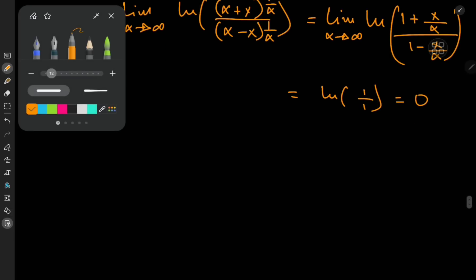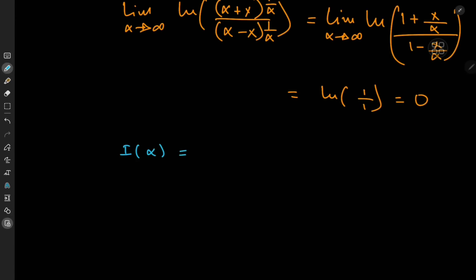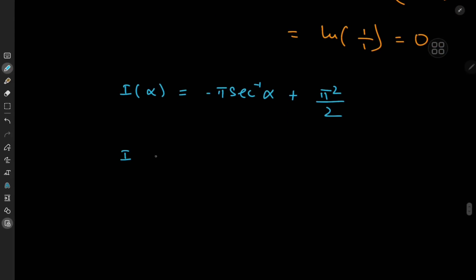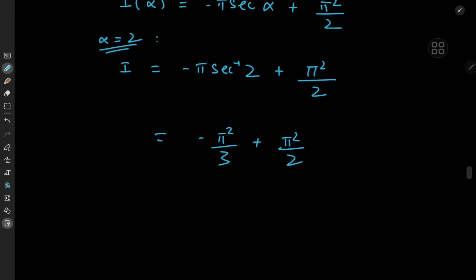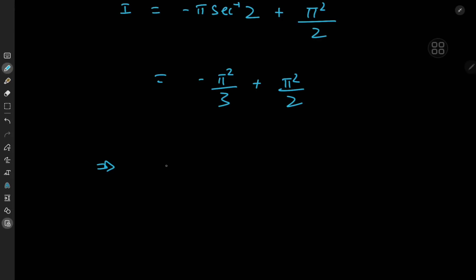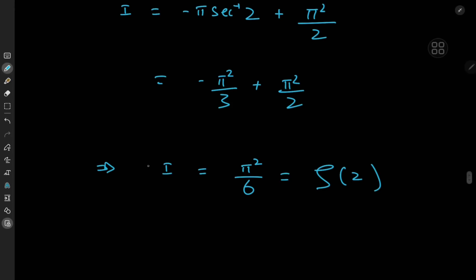We now have I(alpha) = -pi times the inverse secant of alpha + pi²/2. Our target was alpha = 2, so I(2) = -pi times the inverse secant of 2 + pi²/2. Since the inverse secant of 2 is pi/3, we get -pi²/3 + pi²/2 = pi²(1/2 - 1/3) = pi²/6, which equals zeta(2). That's very nice indeed.